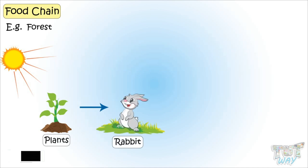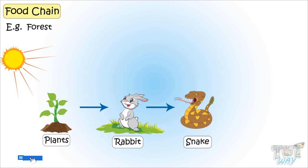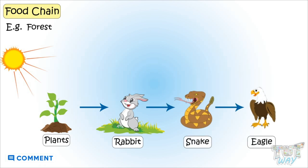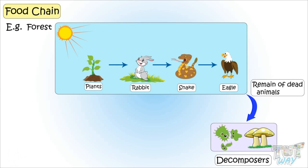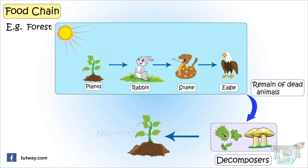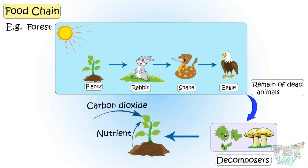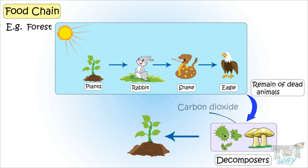Rabbits eat plants, rabbits are eaten by snakes, snakes are eaten by eagles and vultures. All the dead animals are decomposed by decomposers or microorganisms and are again used by plants as nutrients from soil and carbon dioxide from the air, as decomposers also release carbon dioxide into the air when they are decomposing the dead remains.